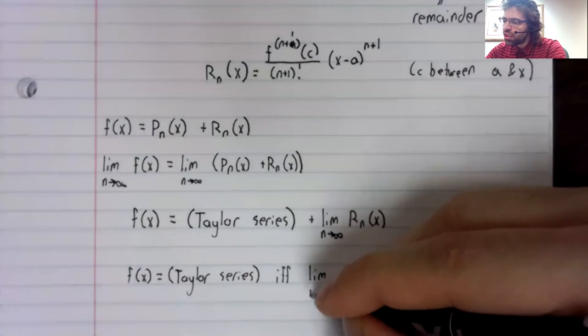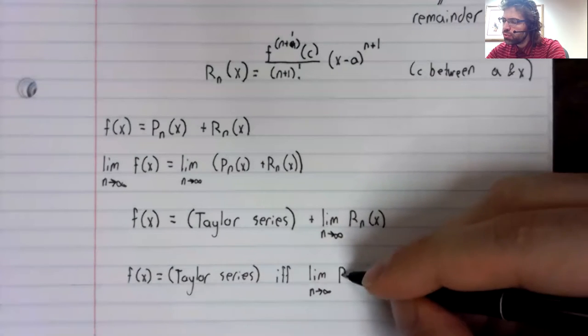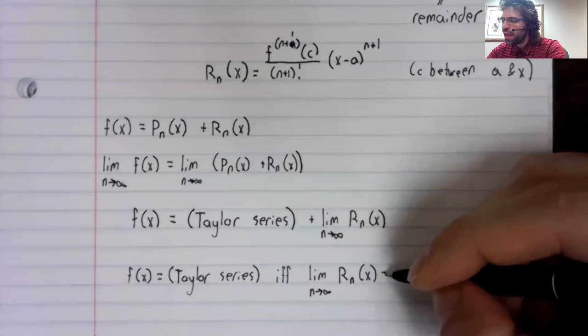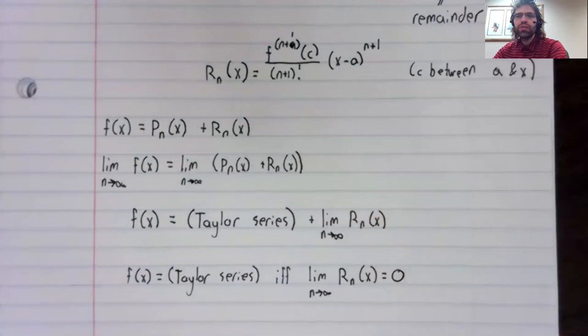If and only if the limit as n approaches infinity of r sub n equals zero.